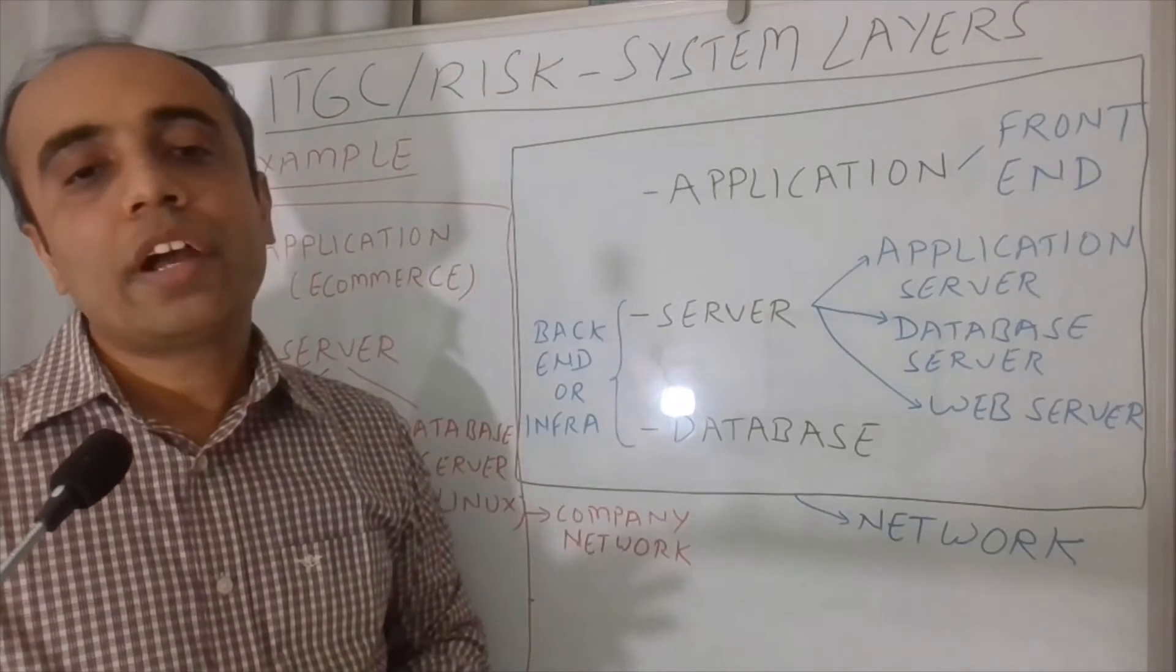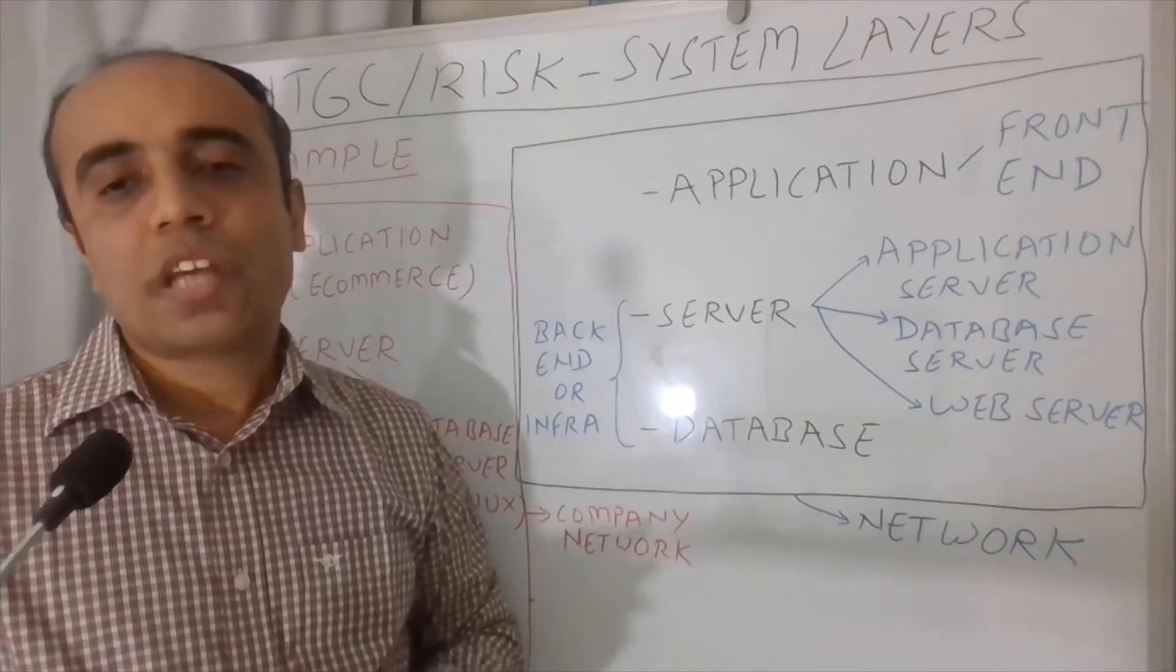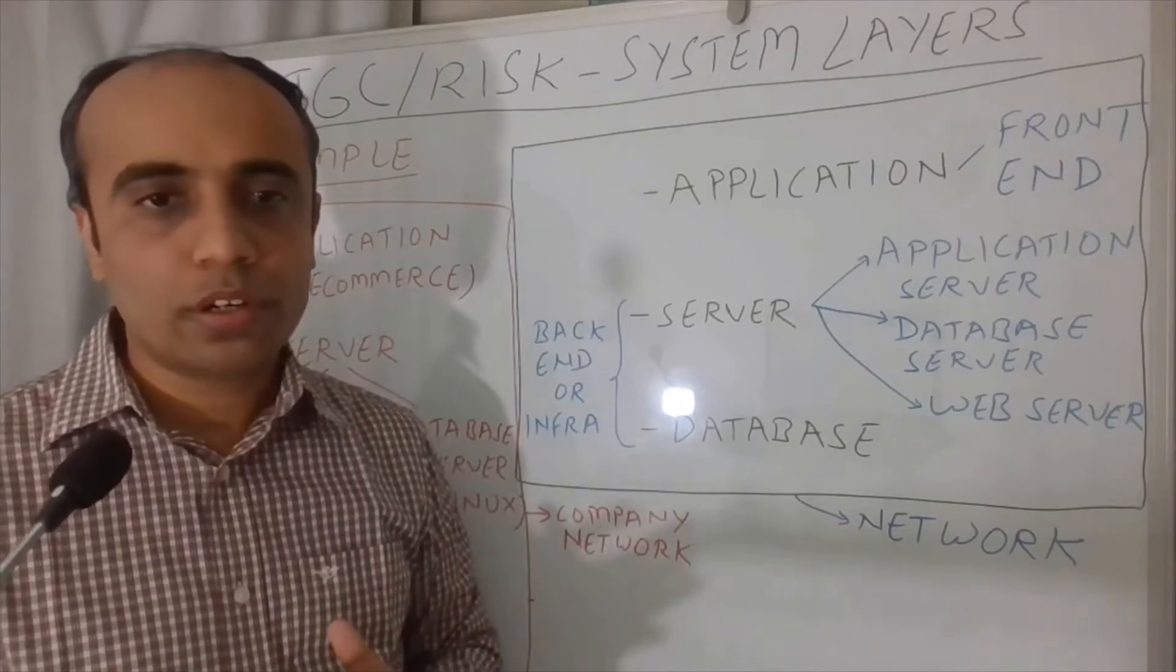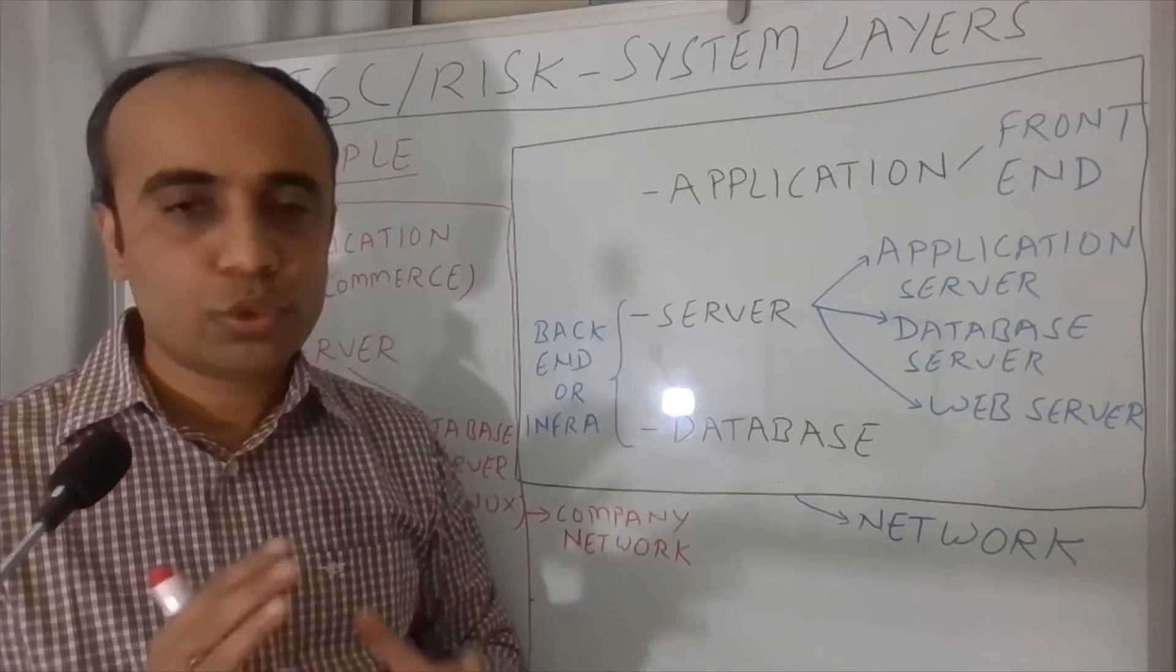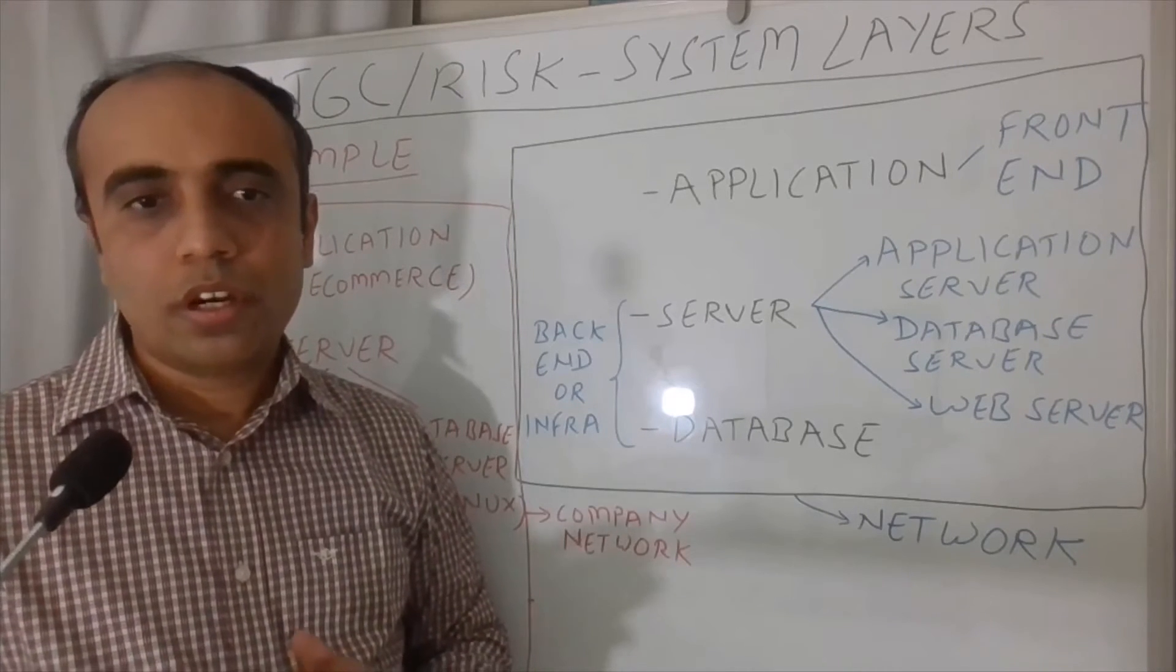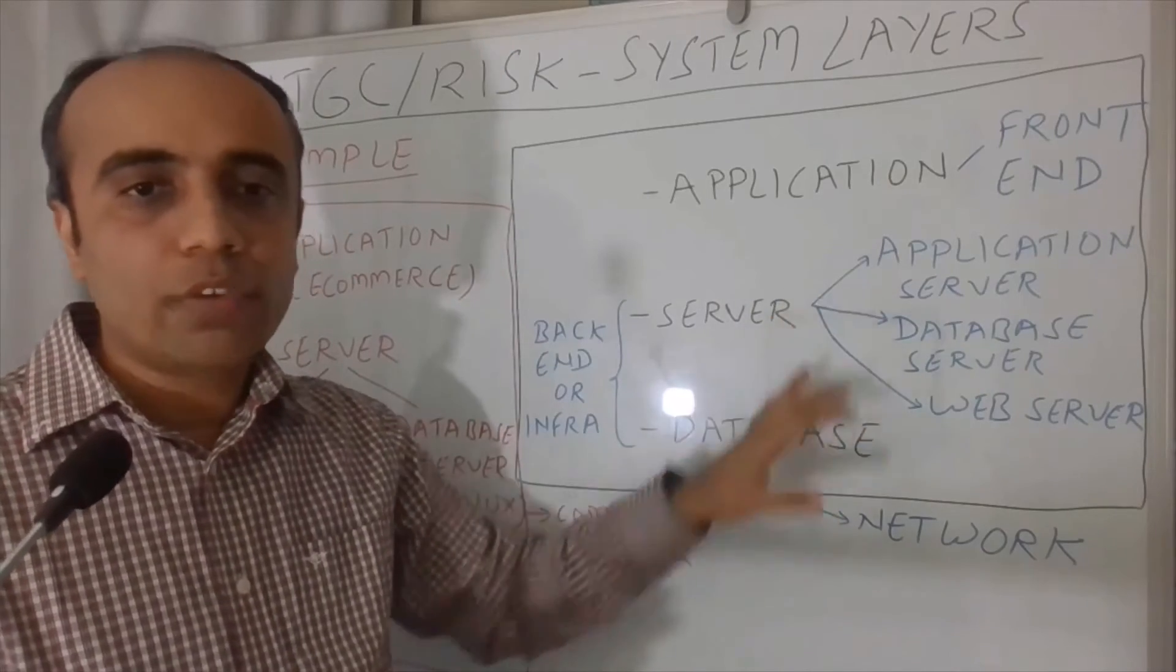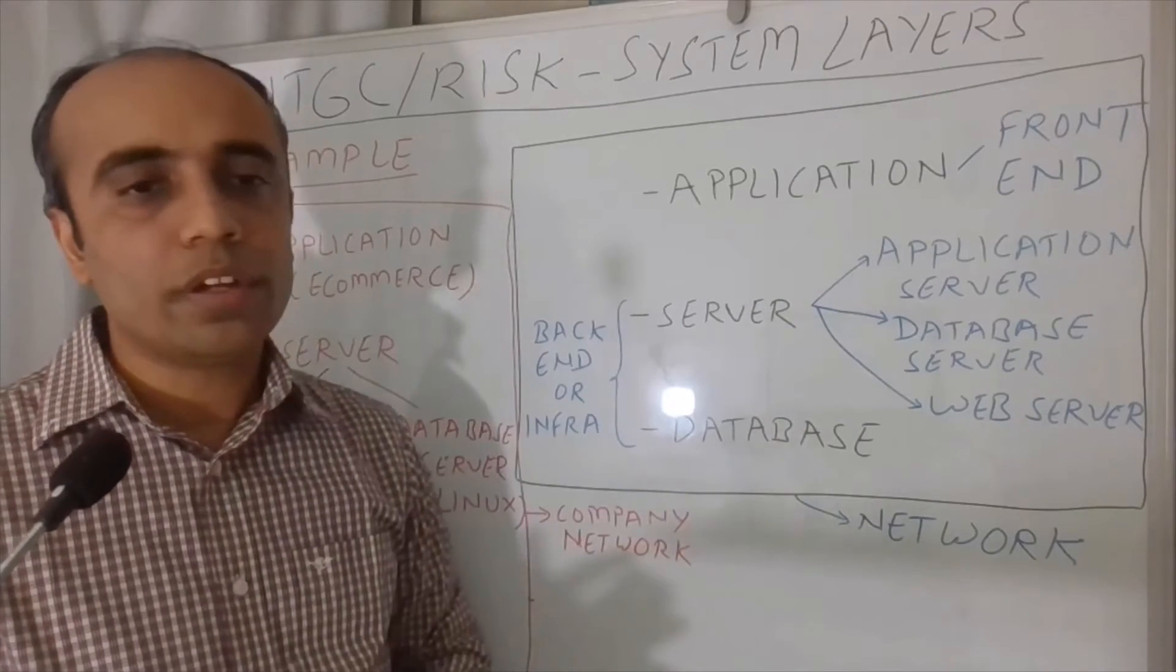To further solidify our understanding, let's take a simple example. Let's take an e-commerce application for buying products online and let's assume it's supported by a Windows application server and an Oracle database hosted on a Linux server just to get some variety. Now, all of these software and hardware components are hosted in the internal company network for this example. And we have already learned about how those software versus hardware components and what resides in a network, right? Those pieces which we dealt with in the prior section.